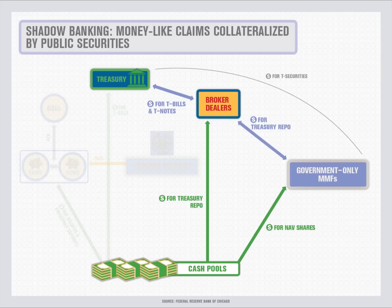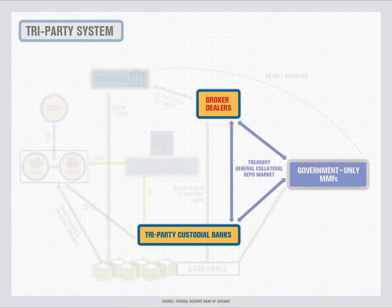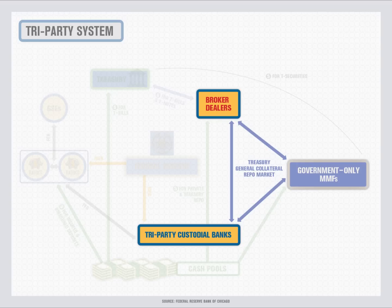The repo market constitutes a very important part of what we call the shadow banking market. Many repo transactions take place through third-party custodial banks in what is known as the tri-party system. Custodial banks offer services including trade settlement, collateral valuation, and collateral eligibility screening. Counterparties sign agreements ahead of time specifying the terms of the repo transactions, such as what collateral will be accepted and what haircuts will apply. The custodian matches lenders to borrowers and holds the lent money and the securities pledged. The Fed has used the tri-party system to conduct repurchase agreements with broker-dealers when conducting open market operations.